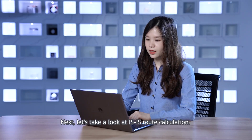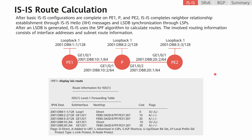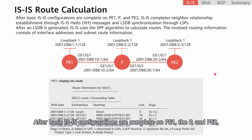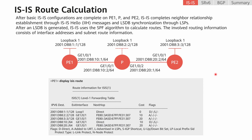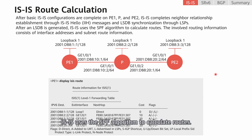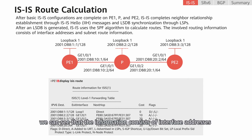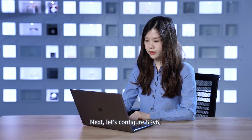Next, let's look at IS-IS route calculation. After basic IS-IS configurations are complete on PE1, the P, and PE2, IS-IS completes neighbor relationship establishment through hello messages and LSDB synchronization through LSPs. After an LSP is generated, IS-IS uses the SPF algorithm to calculate routes. When observing IS-IS route information on PE1, we can see interface addresses and subnet route information.